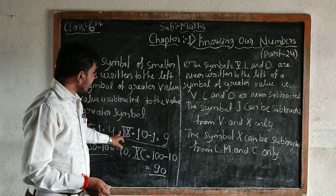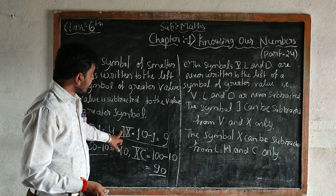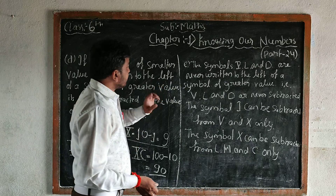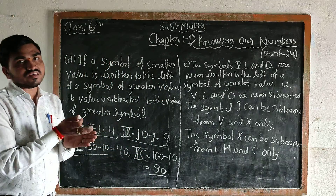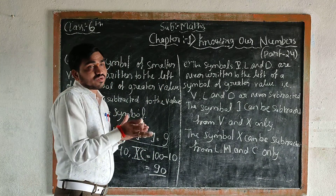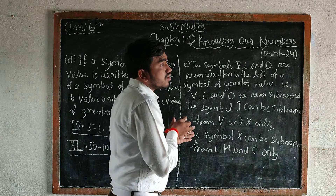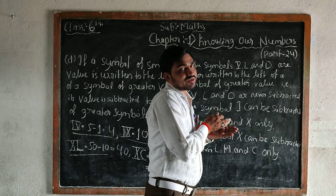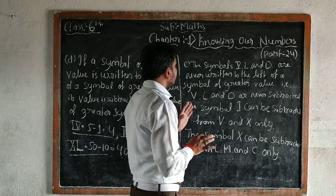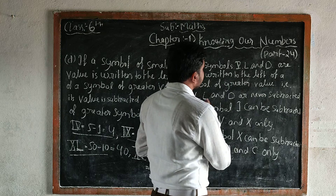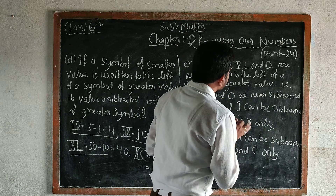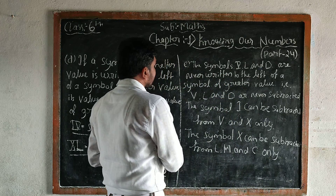L and D are never written to the left because these are the greatest numbers. That's why we never write them to the left and never subtract them. V, L, and D are never subtracted.